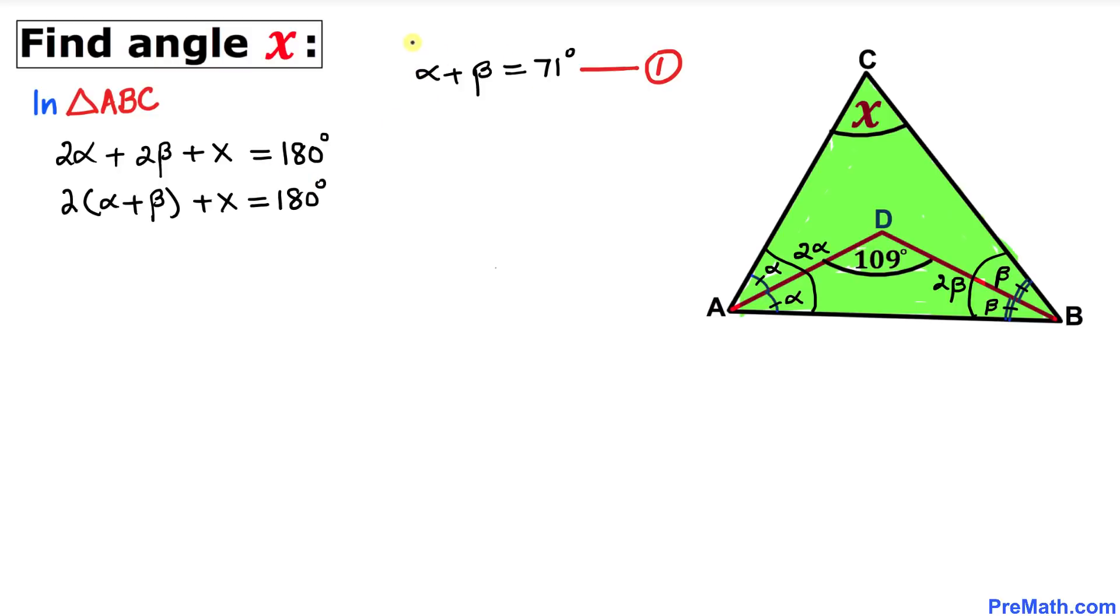But we know alpha plus beta equals 71 degrees. So I'm going to replace alpha plus beta with 71 degrees. Therefore, I can write 2 times 71 degrees plus X equals 180 degrees.